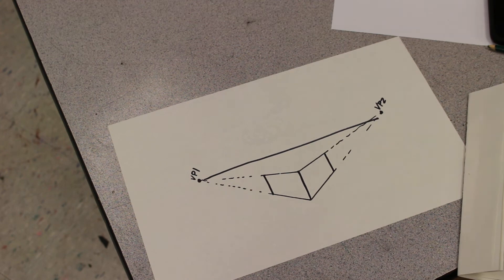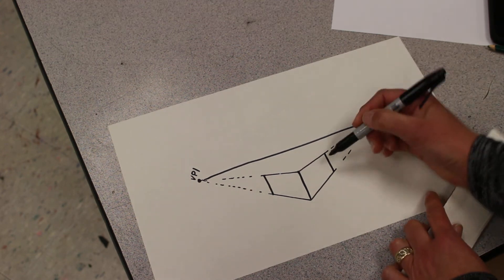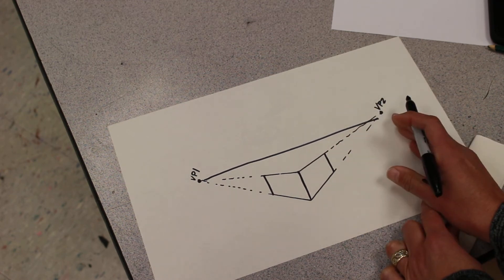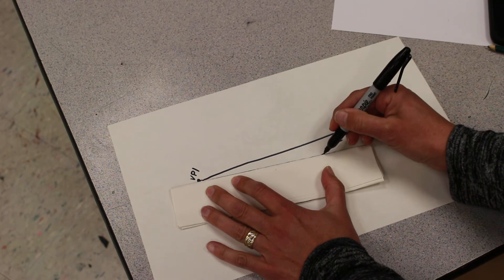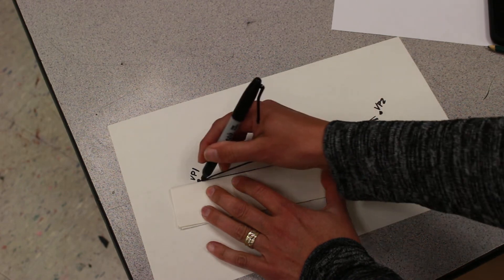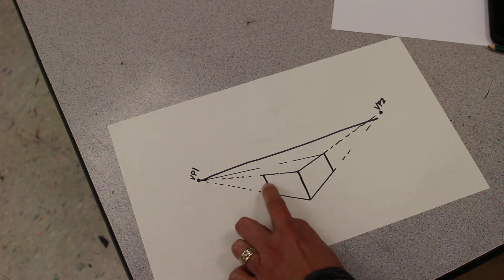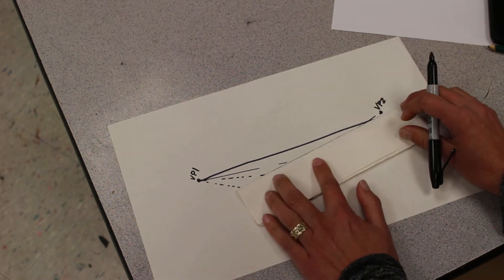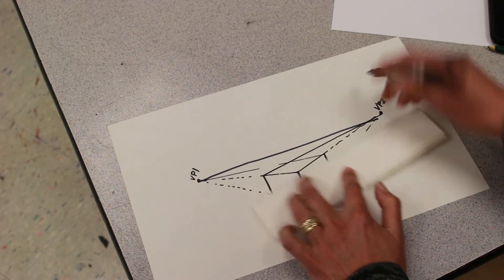Now this box needs a lid or a top to it. So you're going to take the line that is on the right hand side. The top of that line is going to go over to the left hand vanishing point. The top of the box on the left hand side will go right over here to vanishing point two.